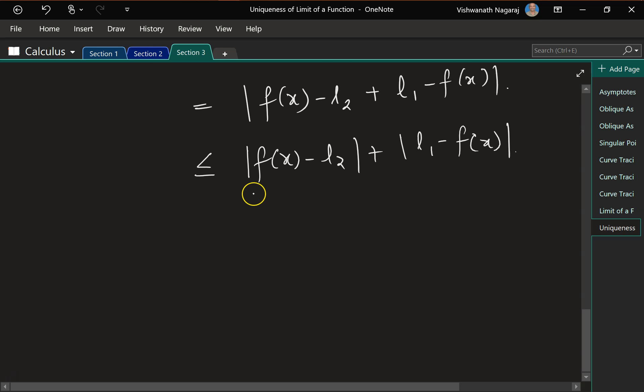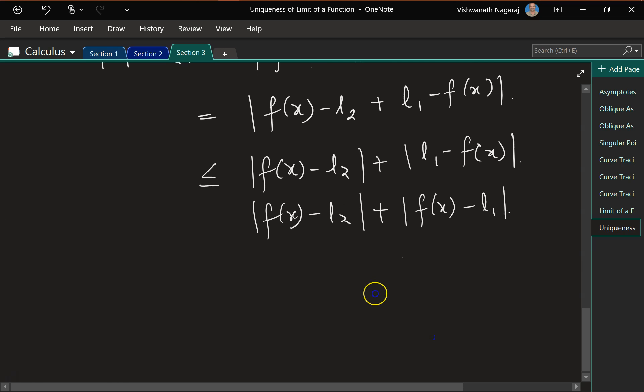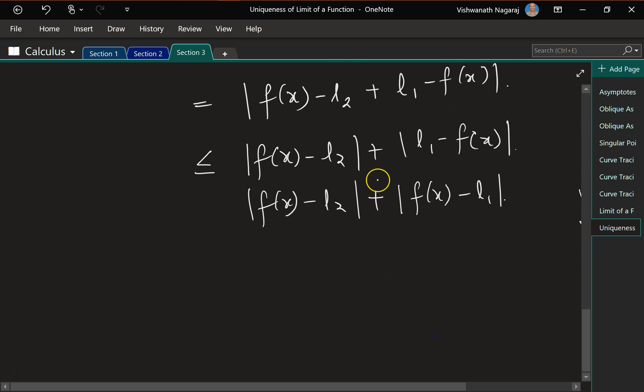Now I can write this as f of x minus l2 plus f of x minus l1. If we are talking of 3 minus 2 or 2 minus 3, this is equal to 1, this is equal to minus 1. There is a difference. But if we talk of magnitudes, what happens? This also would be equal to 1. So now, remember, this is equal to this.